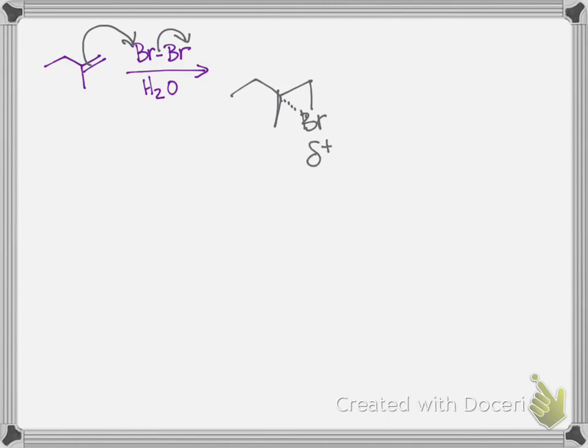So there's partial positive charge on the bromine and partial positive charge on the tertiary carbon. The next step in the mechanism is the nucleophilic attack of water, and the water is going to attack at the carbon that's got the larger partial positive charge.